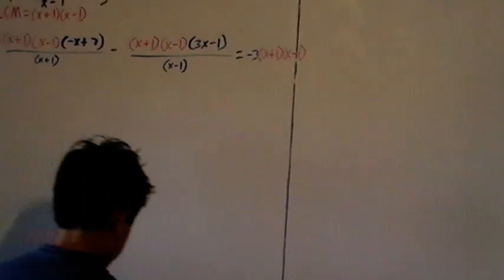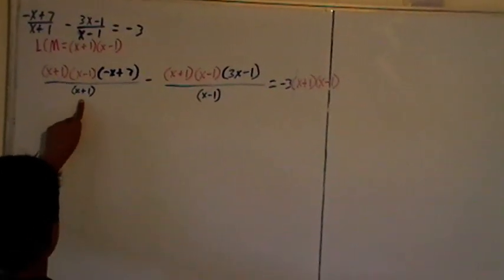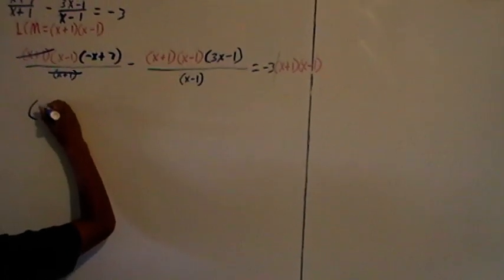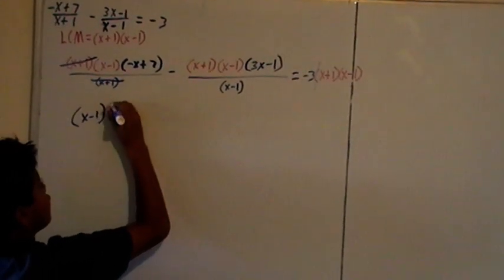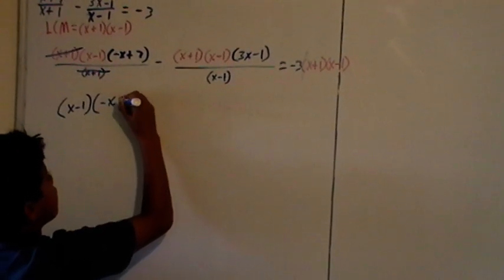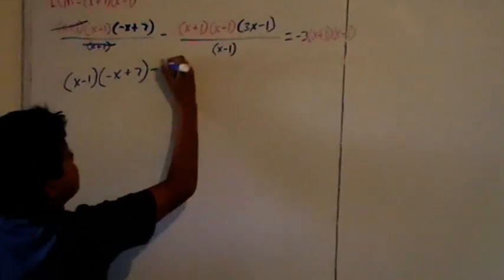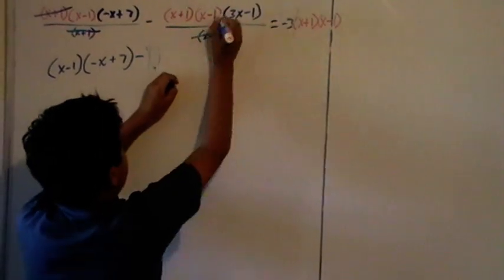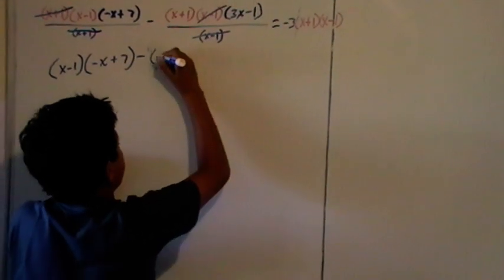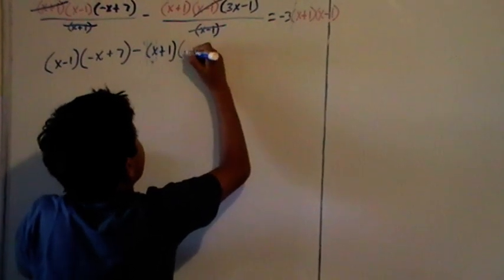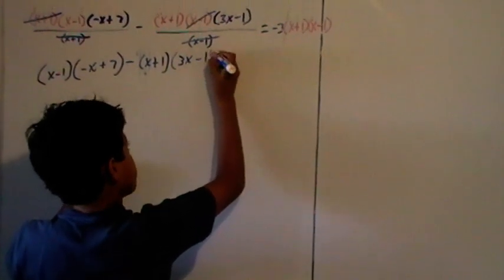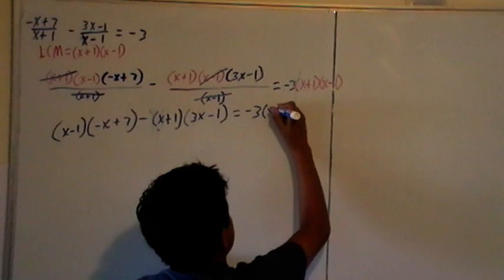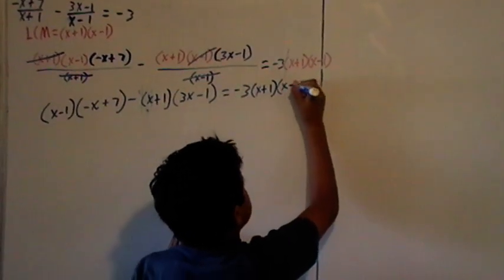Now I can cancel out some of the values. So I can see that x plus 1 and x plus 1 cancel out, and you can cancel out x minus 1 and x minus 1, x minus 1 equals minus 3 times x plus 1 times x minus 1.